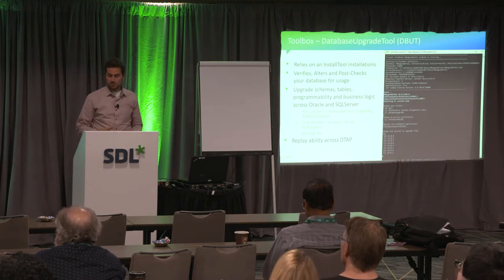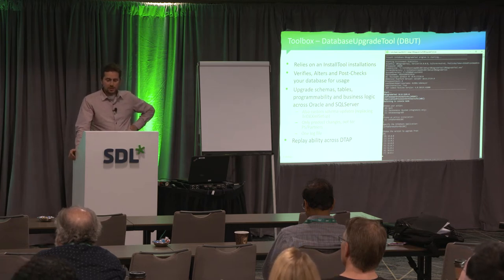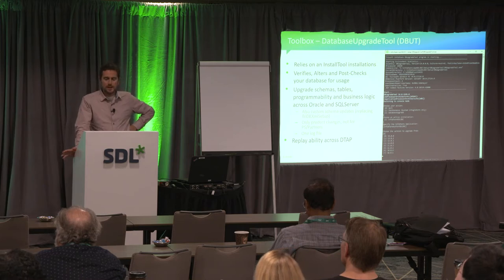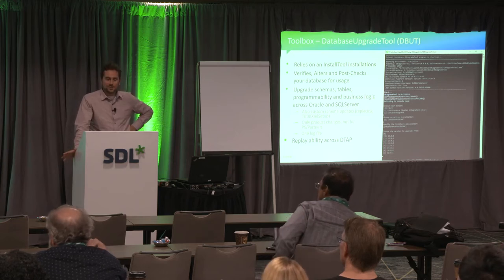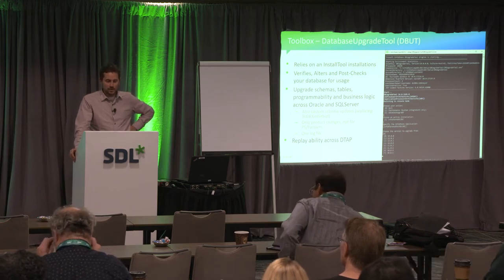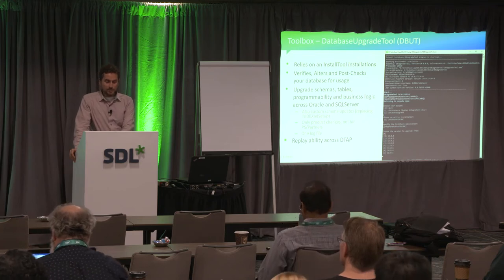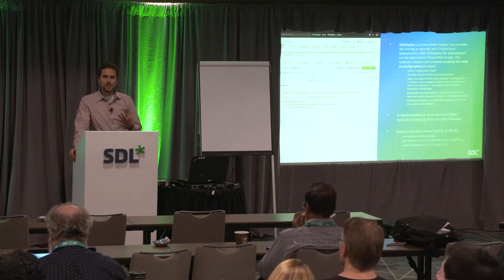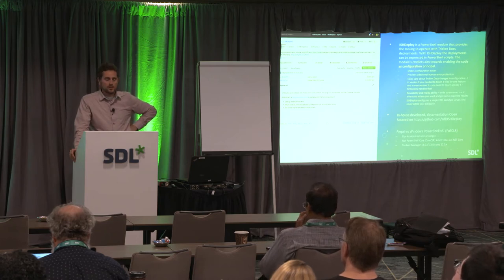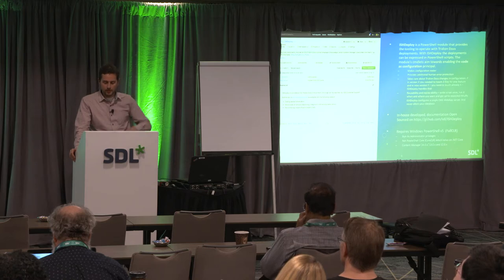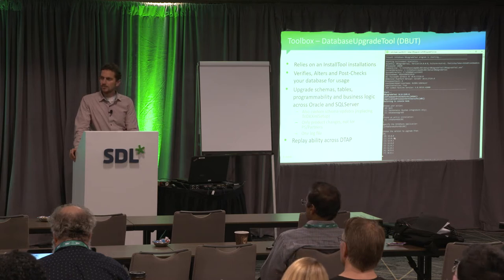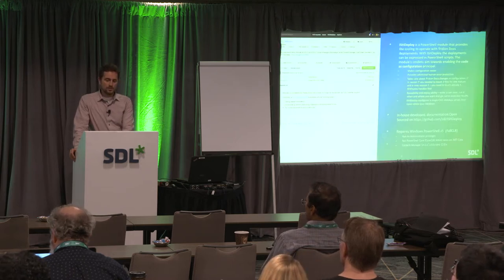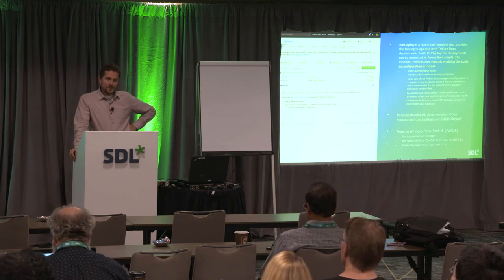The database upgrade tool relies on an existing installation and has three phases: a pre-check, the actual changes, and a post-check on the database. It can flag unexpected tables and give hints. Repeatability is built in, and engineering owns it — we test various upgrade paths across versions. There's also a parameter to force a re-upgrade across versions.